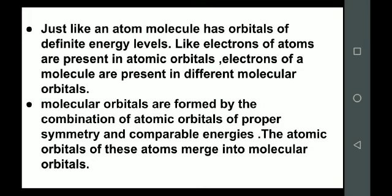Molecular orbitals are formed by the combination of atomic orbitals of proper symmetry and comparable energies. You cannot combine the 1s orbital of one atom with the 2s or 3s orbital of another atom, because there will be differences in size, symmetry, and energy. Only atomic orbitals with similar symmetry and comparable energy can combine — like 1s with 1s, or 2p with 2p.